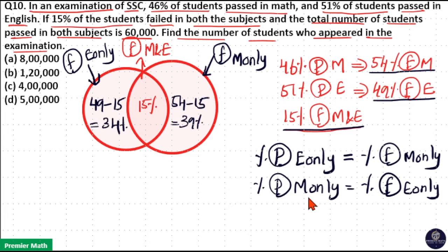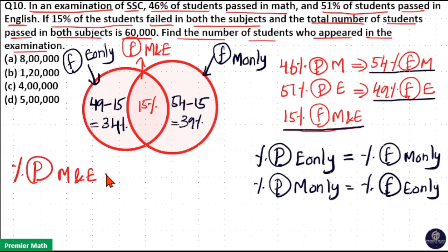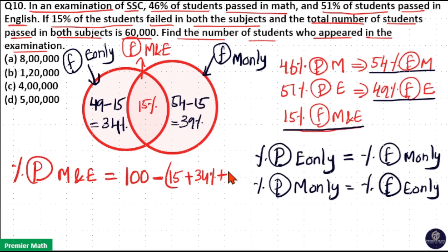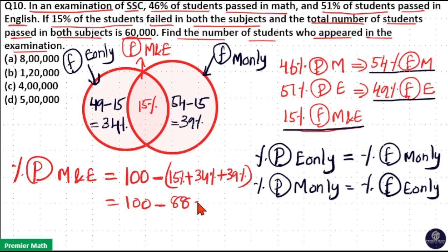Now, the percentage of students who passed in both subjects equals 100 minus the three groups: 15% failed both, 34% failed English only, and 39% failed maths only. That is 100 minus 34 plus 39, which is 73, and 73 plus 15 equals 88, so 100 minus 88 equals 12%.